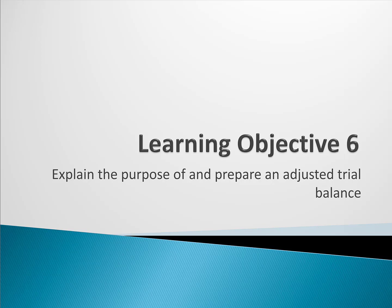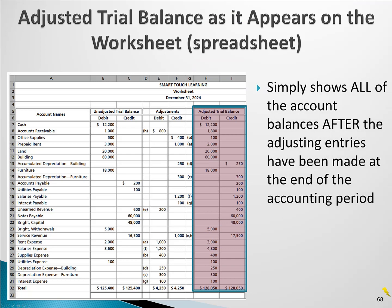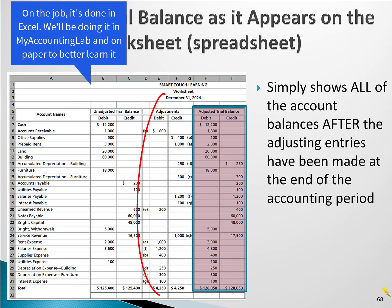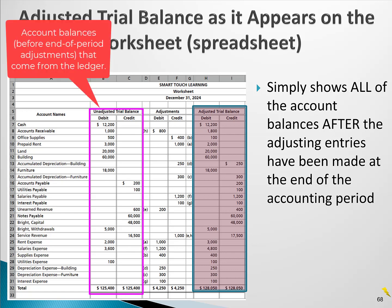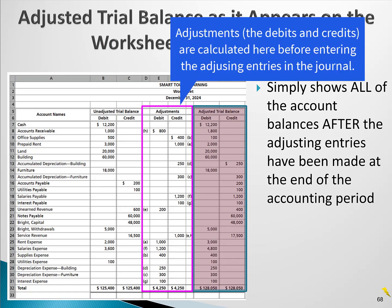Our next learning objective is to explain the purpose of and prepare an adjusted trial balance. What we're looking at here is the worksheet, which is an Excel spreadsheet that the accountant creates at the end of the accounting period to help organize the adjustments. On the far left we have a set of columns called the unadjusted trial balance — those are the balances of the accounts before the adjustments. Because a company usually has many adjustments, the accountant will almost always enter and calculate the adjustments in these two adjustment columns.